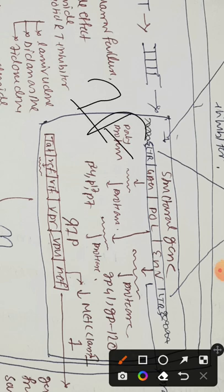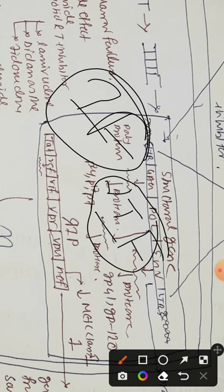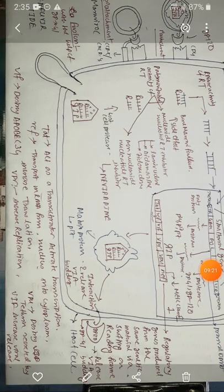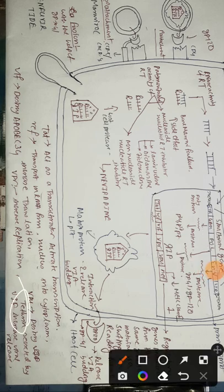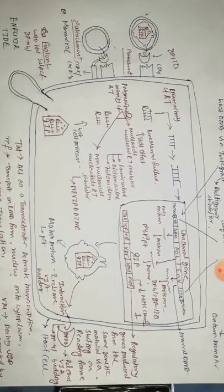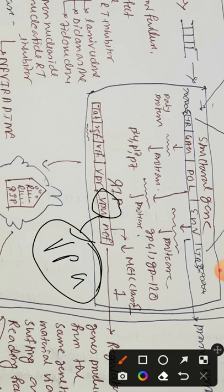Interferon — specifically gamma interferon — has the ability to produce tetherin. This tetherin synthesized by gamma interferon will decrease viral release. VPU produces VPU protein, and this VPU protein destroys the tetherin protein synthesized by gamma interferon, so that the virus can be released.